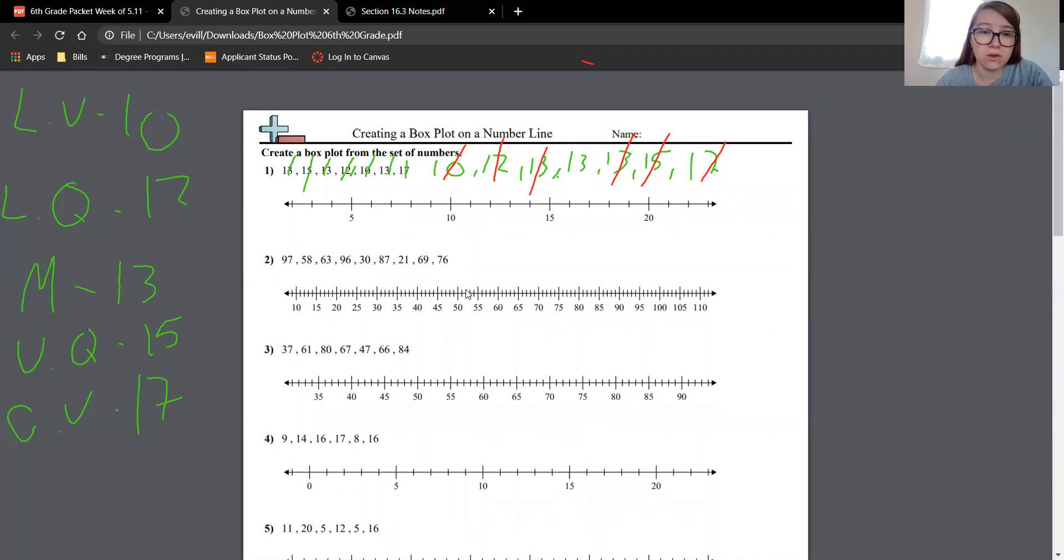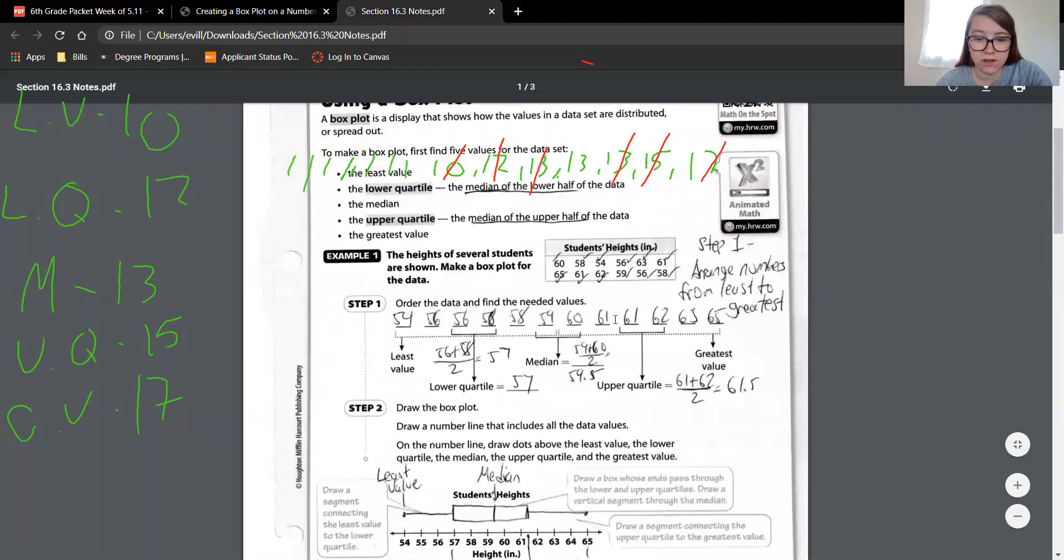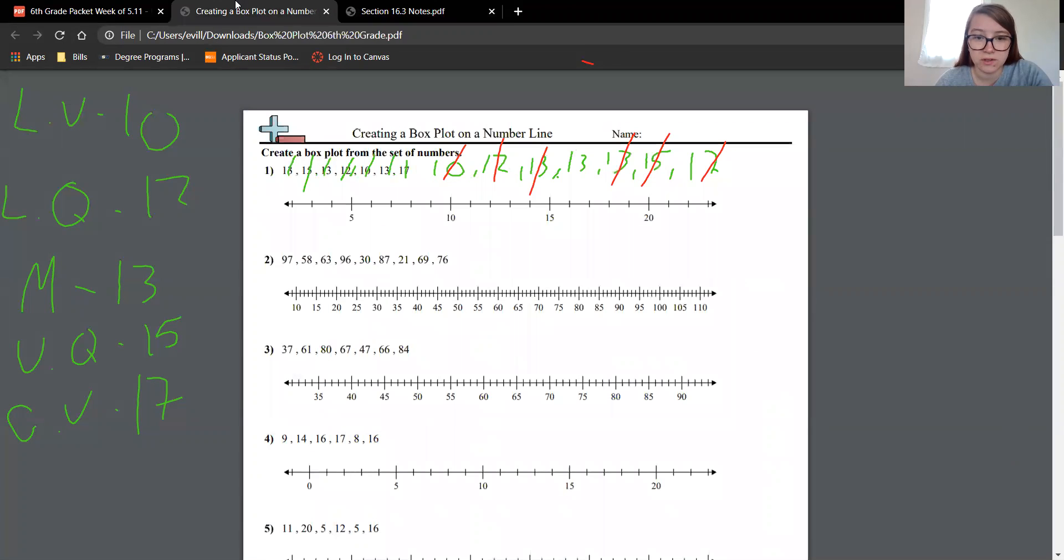So let's go back here. So now we need to make our box. Look at our data. We did all that. Now to draw the box plot. First, we need to draw a number line that includes all the data values. Well, we have a number line doesn't have everything filled in yet. So why don't we fill it in just to help ourselves out. So six, seven, eight, nine.